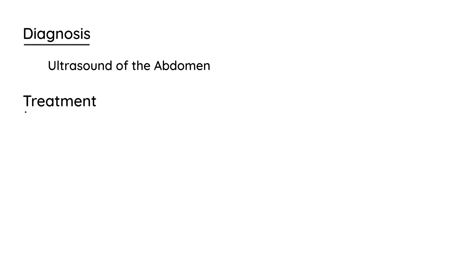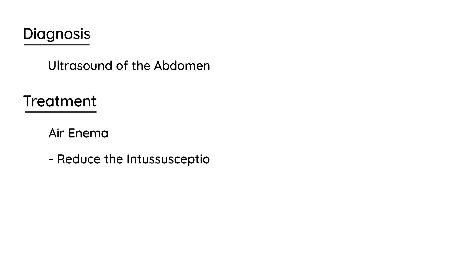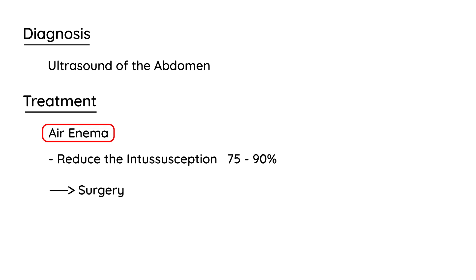How do you treat intussusception? You give another type of enema that does not have a risk of perforation — an air enema — which is used to reduce the intussusception. About 75 to 90% of cases are reduced with this air enema. If still unsuccessful, you go to surgery to surgically remove the affected segment of the colon.